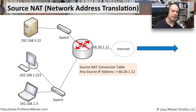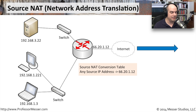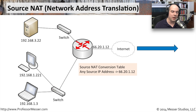Another nice part about this is that we're not connecting our users directly to the internet. There's no way for someone on the internet to access 66.20.1.12 directly and somehow end up at this user. The only way you would be able to do that is if that user asked Google first and Google replied. So there is a security component to providing that source NAT.